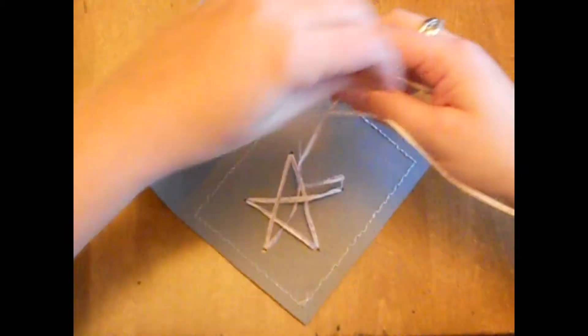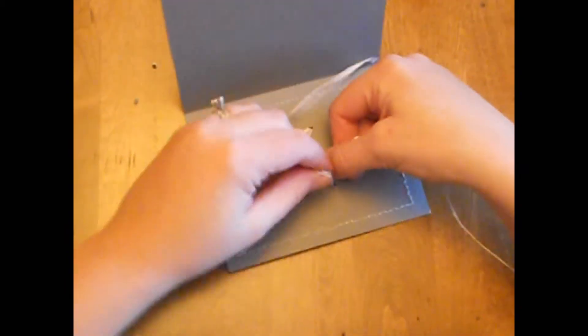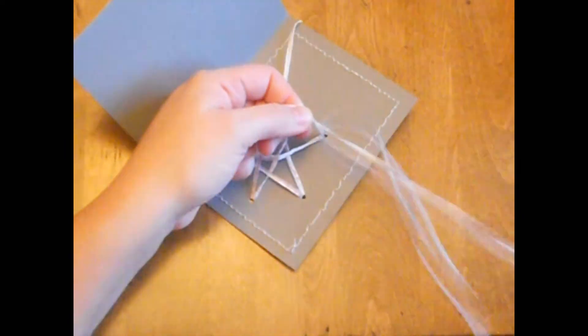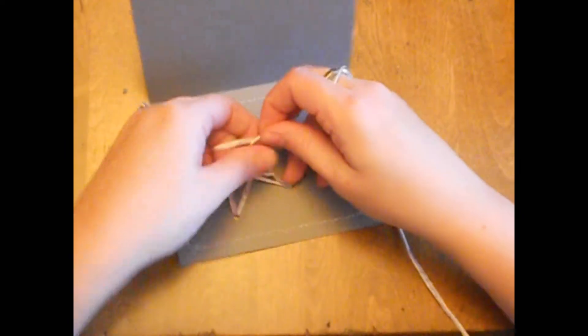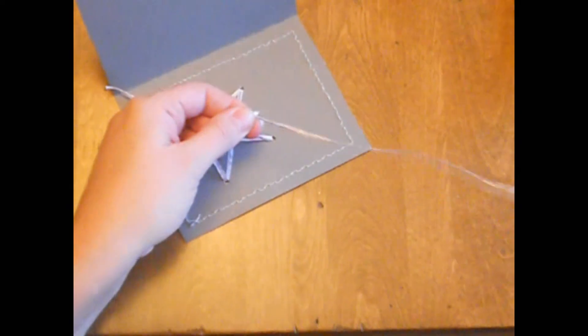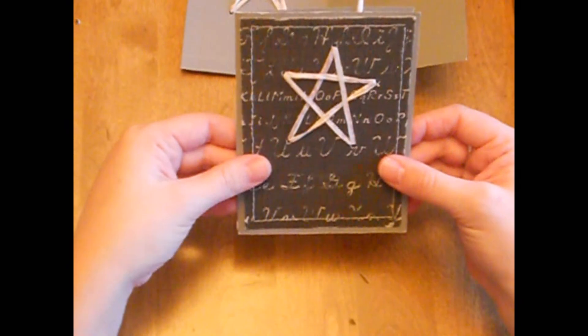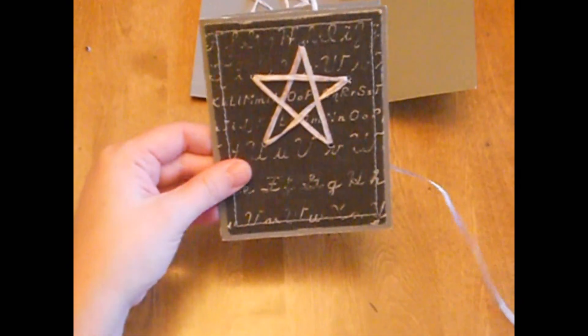And then all you do is in the back here go ahead and tie a knot, and then you're just going to trim this off, and you have a card with a star made out of the paper raffia.